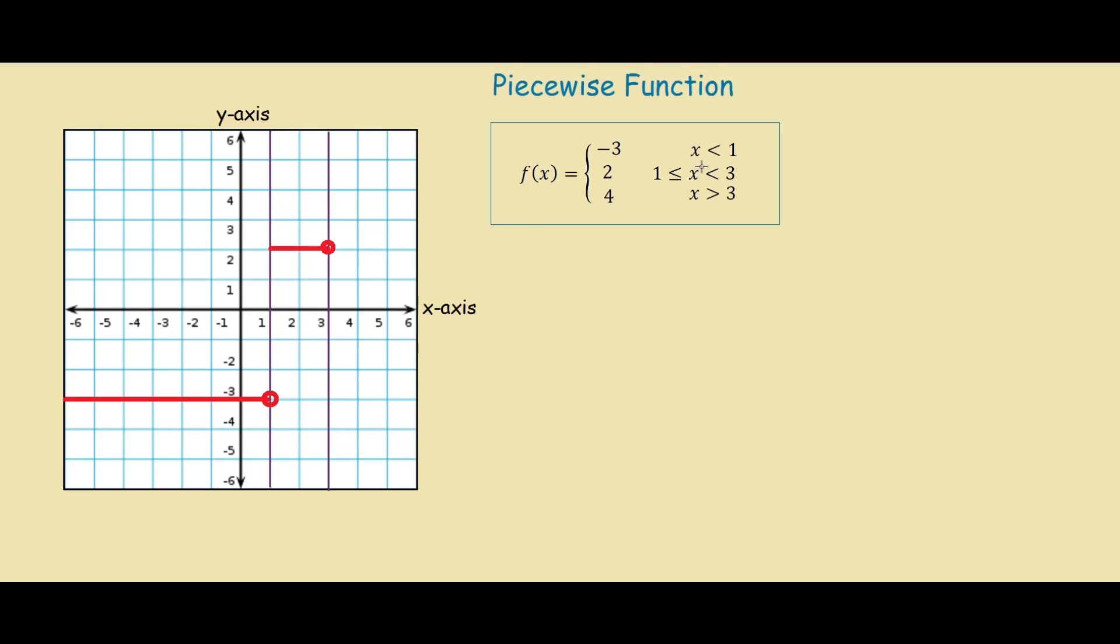However, if we look at our restraint this time, it has an equal sign, less than or equal sign. So how we represent this is a closed circle, which is filled in.